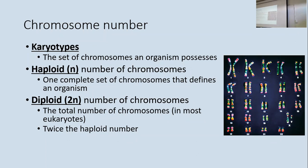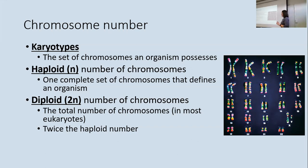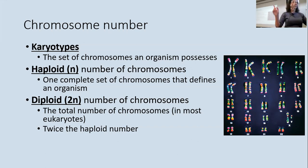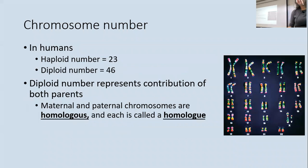The haploid number is 23 — the number of different chromosome types. Your diploid number of 46 is double your haploid number. Gametes carry the haploid number, so when sperm and egg join together you get a diploid organism with two copies of everything. As a human, each body cell has a haploid number of 23 and a diploid number of 46, representing contributions from both parents.